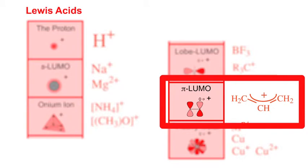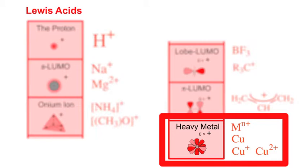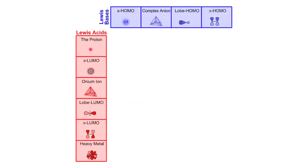Pi Lumo Lewis acids. These are electron poor pi systems such as the allyl cation. And finally we have heavy metal Lewis acids. These Lewis acid species can be the metals and they can be the metal cations. So we have 4 types of Lewis base and 6 types of Lewis acid.